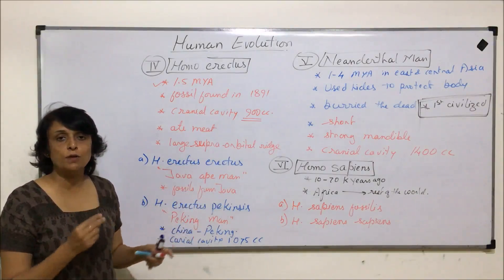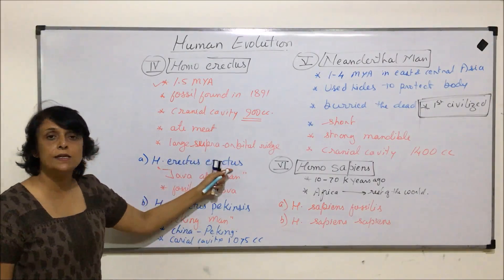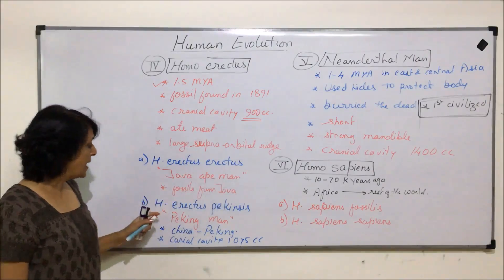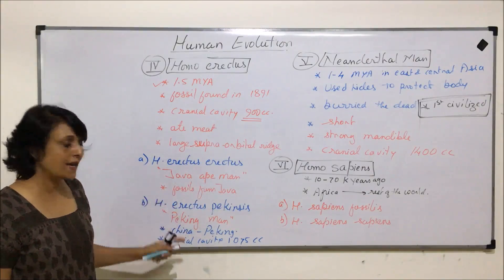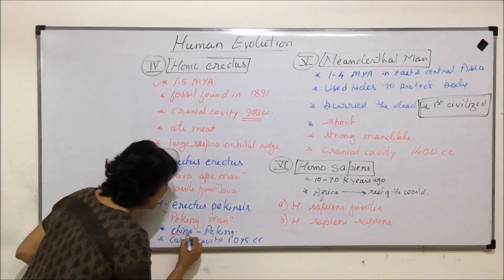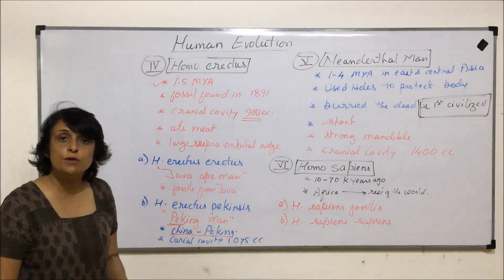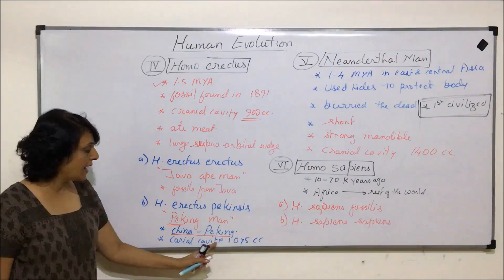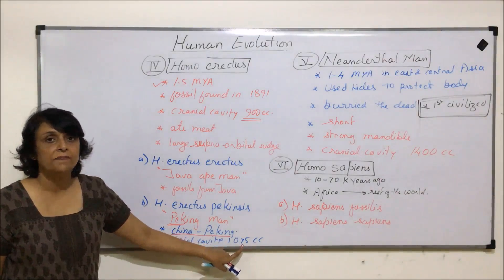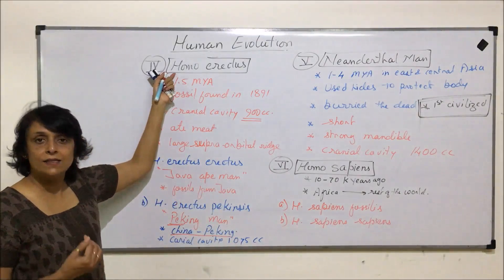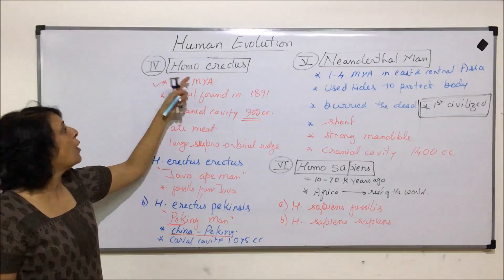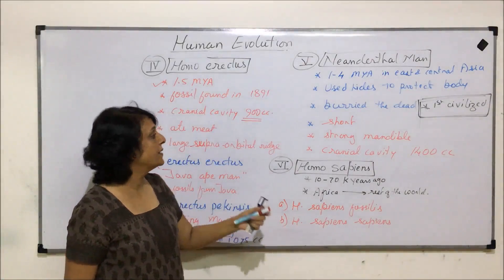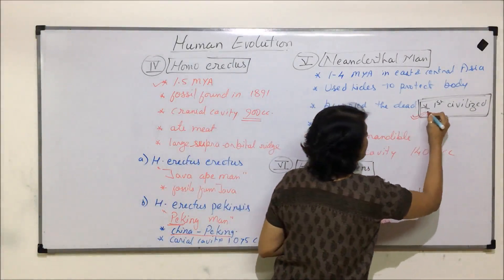After Homo erectus, two more similar fossils were found and given separate names. One was Homo erectus erectus, discovered from Java, commonly called Java Man. The second fossil was discovered from Peking, China, and is called Peking Man. Peking Man had a cranial cavity of approximately 1075 cc. Both are subtypes of Homo erectus.